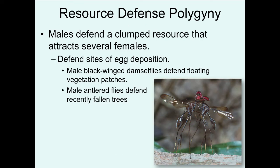In resource defense polygyny, females are more widely scattered at first, but males defend clumped resources that attract numerous females. For example, male black-winged damselflies defend floating vegetation patches as egg deposition sites, attracting large numbers of females. Male antlerflies defend recently fallen trees — egg deposition sites — and show direct male-male fighting using modified mouthparts resembling antlers to establish dominance and ownership of a fallen log.